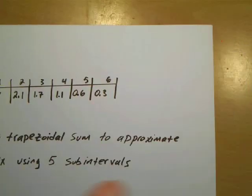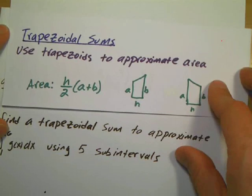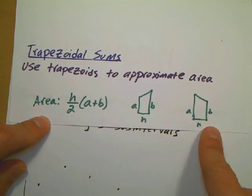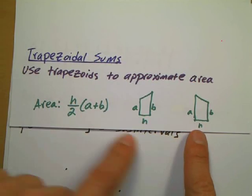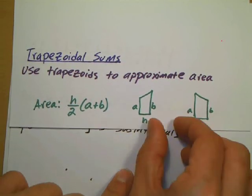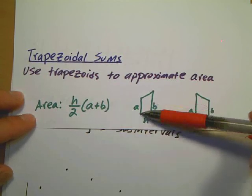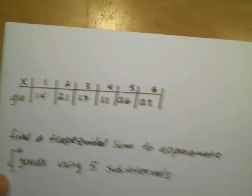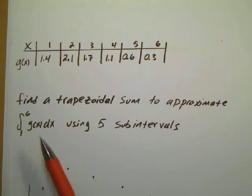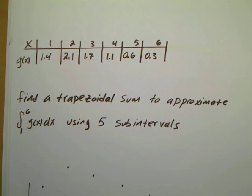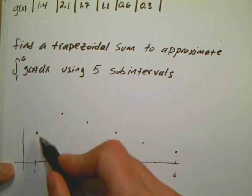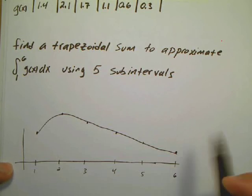The next and last Riemann sum deals with trapezoids. The definition of a trapezoidal sum is that you use trapezoids to find the area. The area formula for a trapezoid: you find h, which is the width of each trapezoid, and then add the two consecutive parallel sides. A trapezoid can be shaped in different orientations but has the same area formula. For this example, g of x is integrated from one to six using a trapezoidal sum.